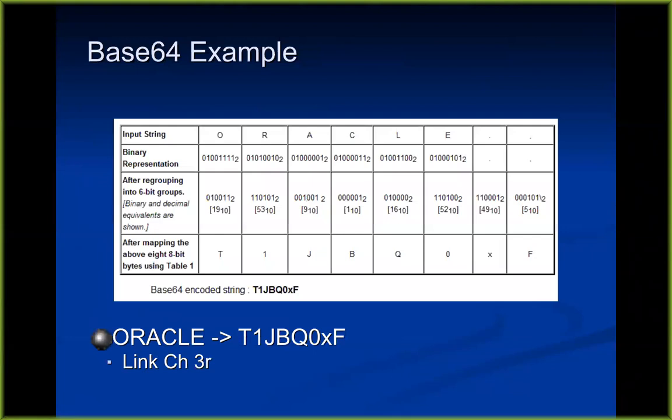Here's Oracle as an example. Oracle in ASCII uses eight bits per character. You run them all together and group them by six. You take the bits from O, combine the remaining bits from O with the first four bits of R, group them by six, then look them up on the list of 64 characters. So Oracle turns into capital T, 1, capital J, capital B. You'll see long strings of mixed-case letters and numbers — that's base 64. If it just has numbers and letters A through F, that's hexadecimal. You see these all the time in cookies, in Wireshark, in the projects.